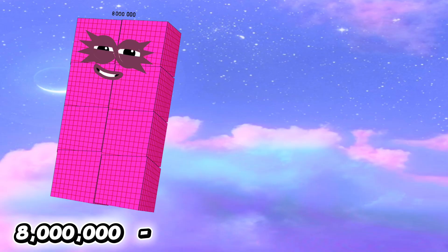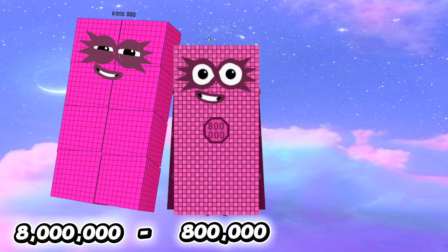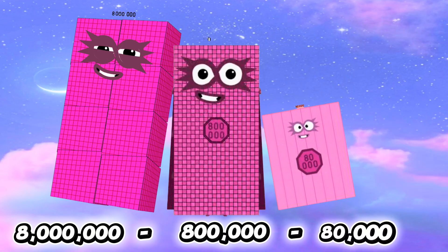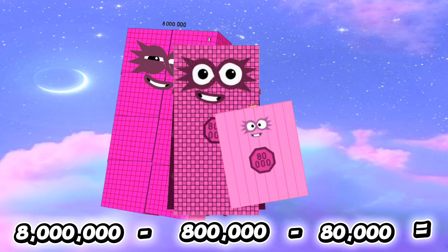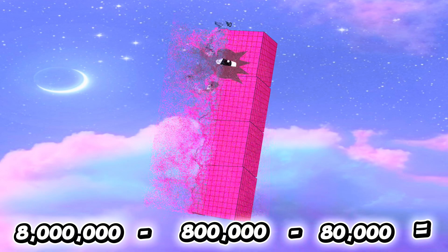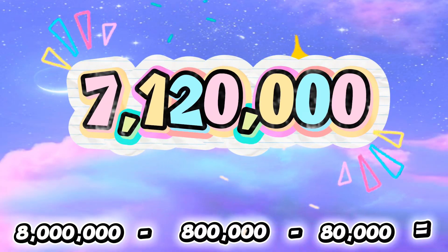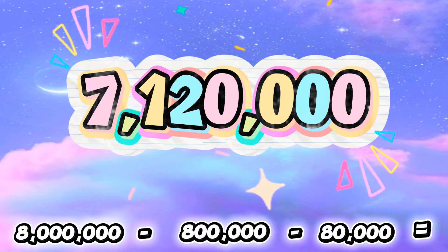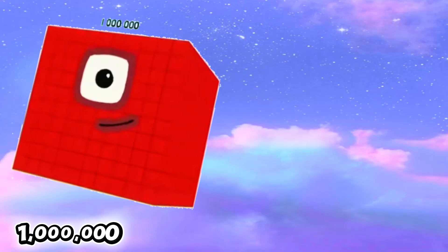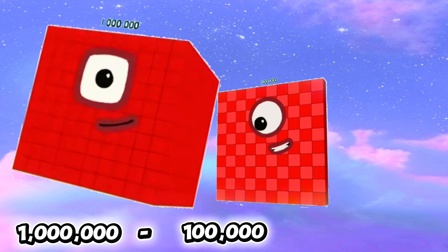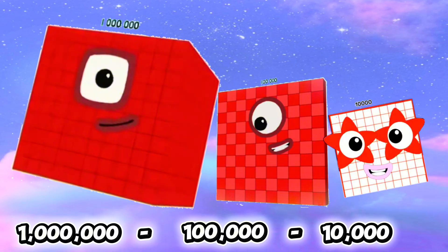8,000,000 minus 800,000 minus 80,000 is equals to 7,120,000.